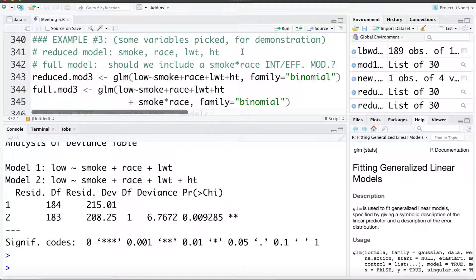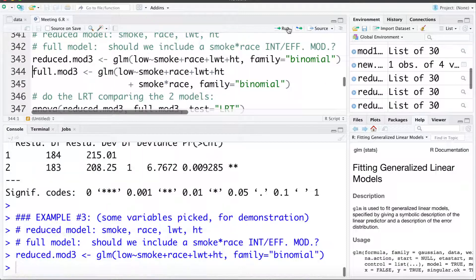Now let's look at one final example. Here we're going to test: should we include a smoking by race interaction or effect modification? Do we think that the effect of smoking would change depending on the race category? Here I'm going to start with a reduced model that's smoking, race, LWT and HT. So let's fit that model. And then we have a full model with the same variables included but also a smoking by race interaction or effect modification.